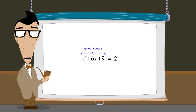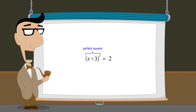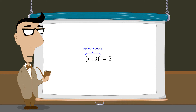So the zero-product property cannot be used. However, since the quadratic expression is a perfect square, it can now be rewritten as a square of a linear expression. The square root of both sides of the equation can then be taken to simplify the equation into a form that can be easily solved.